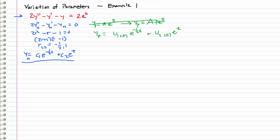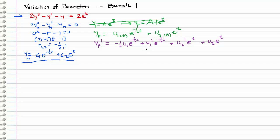We know we could use undetermined coefficients in this example, but we are going to use variation of parameters instead. The very next step is to plug our assumption of yp back into the differential equation and solve for the unknown functions u1 and u2. So let's differentiate yp twice. Using the product rule, we get negative one-half u1 e to the negative one-half t plus u1 prime e to the negative one-half t plus u2 prime e to the t plus u2 times e to the t.